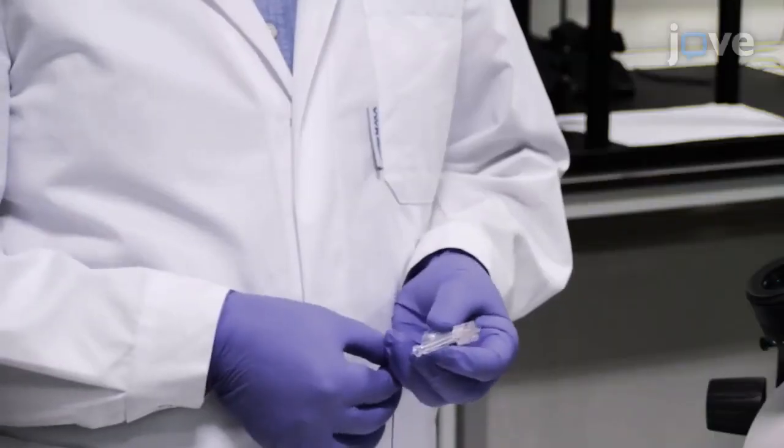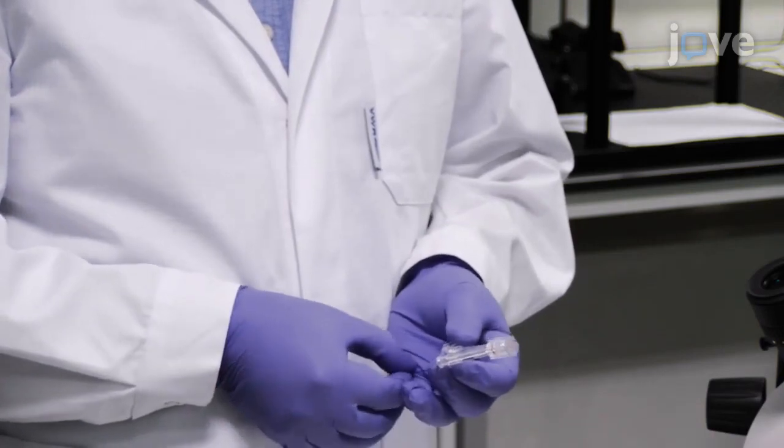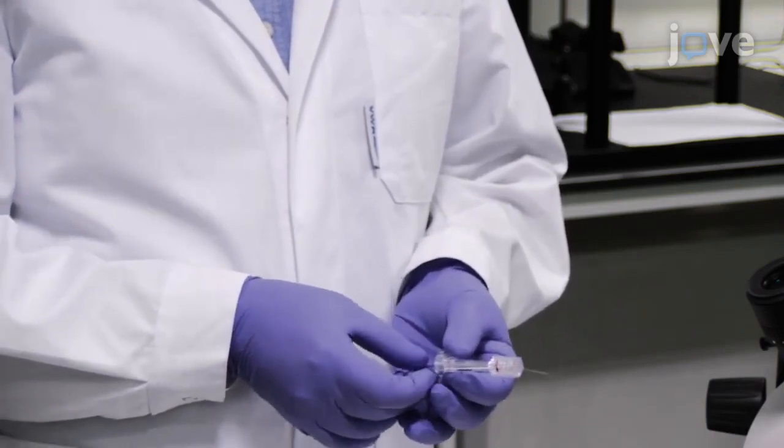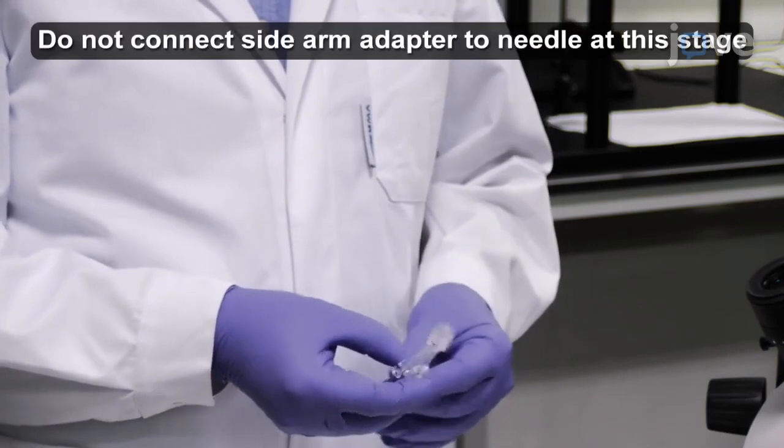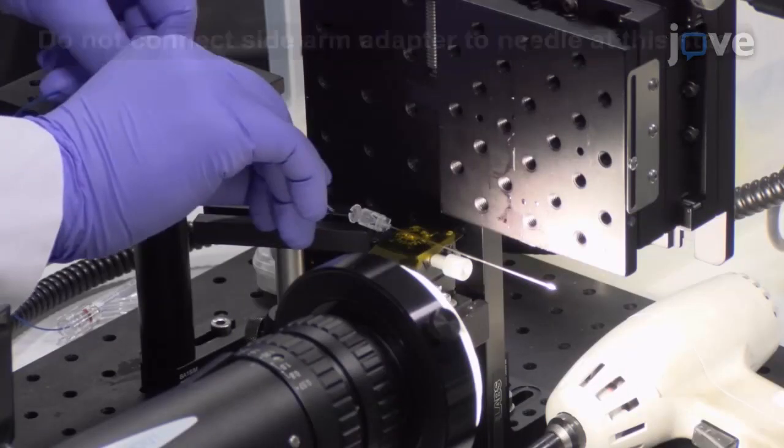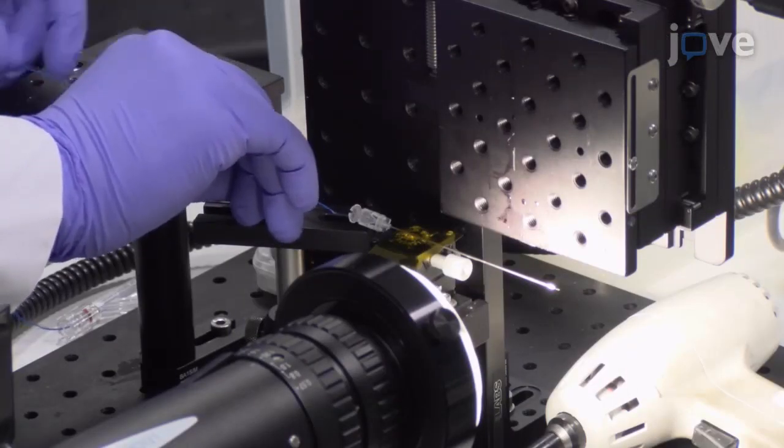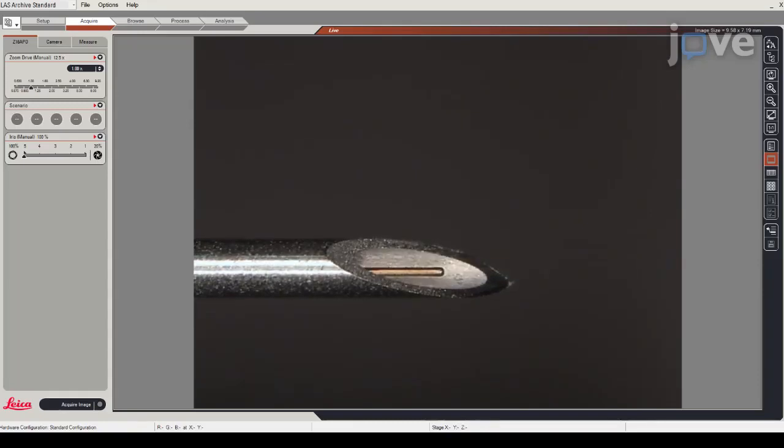With the distal end of the needle in view, insert the fiber optic ultrasound receiver through the cannula of a TWOHI-BORST sidearm adapter and subsequently through the luer connector of the needle until the sensing region of the hydrophone is just proximal to the bevel surface of the needle.